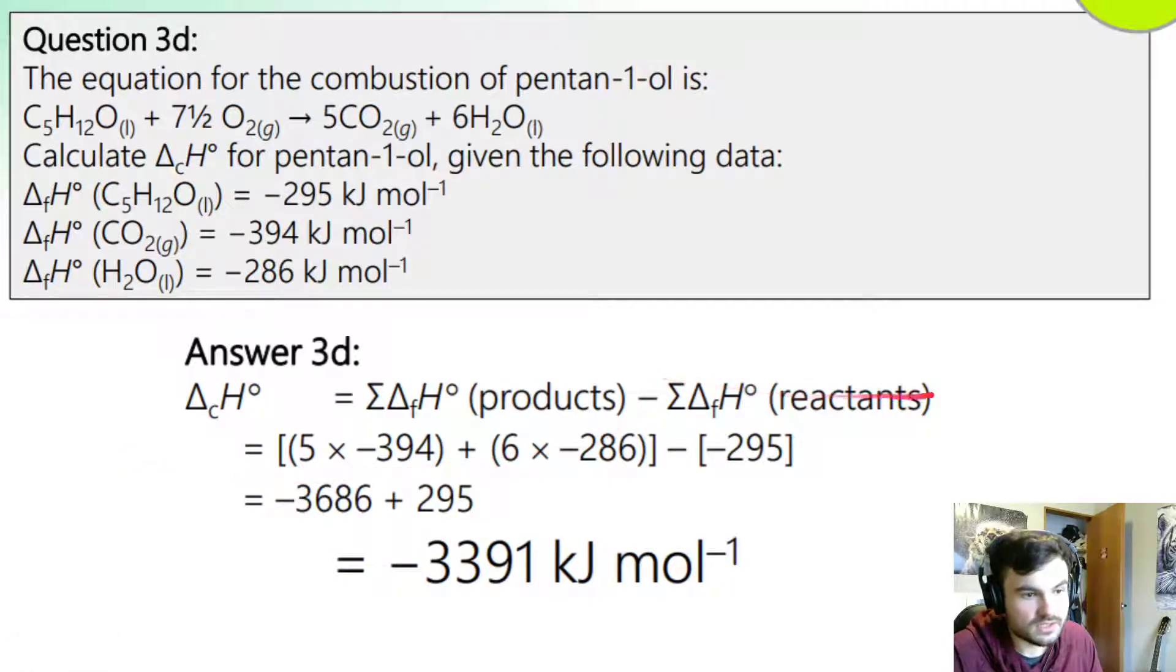Then we're minusing the reactants. The reactants here is pentan-1-ol plus some oxygen. We don't have a value for oxygen because it's already in its base state. It doesn't have a delta F value. So we're only minusing, and notice we're minusing a minus, we're actually plussing it, but we're minusing what's already here and that's negative 295. That gets us a value for our reaction. Again, it's negative so it's exothermic.